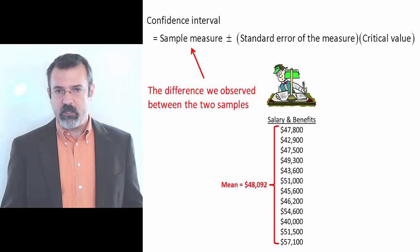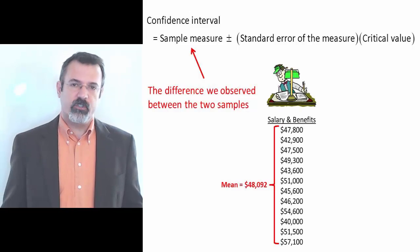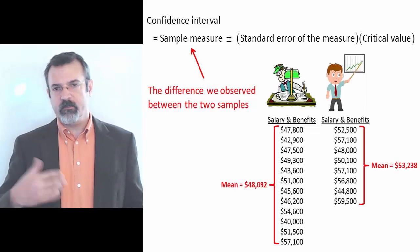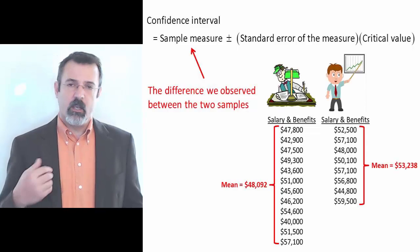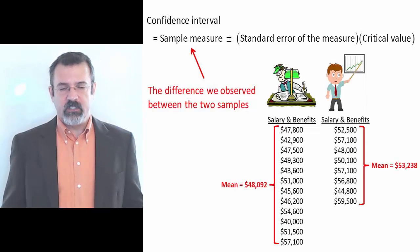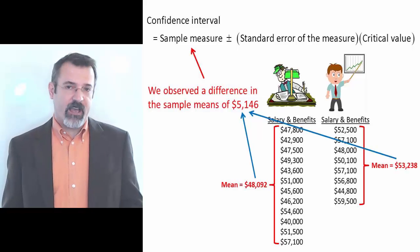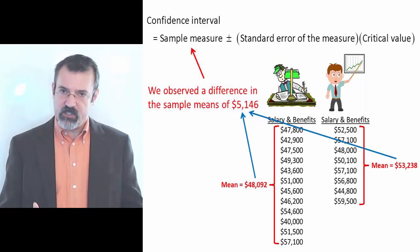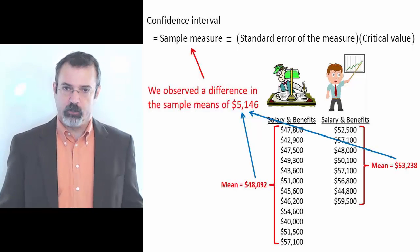For the accountants, we observed an average of $48,000. For the financial analysts, we observed an average of $53,000. The difference is $5,146. This is our sample measure.